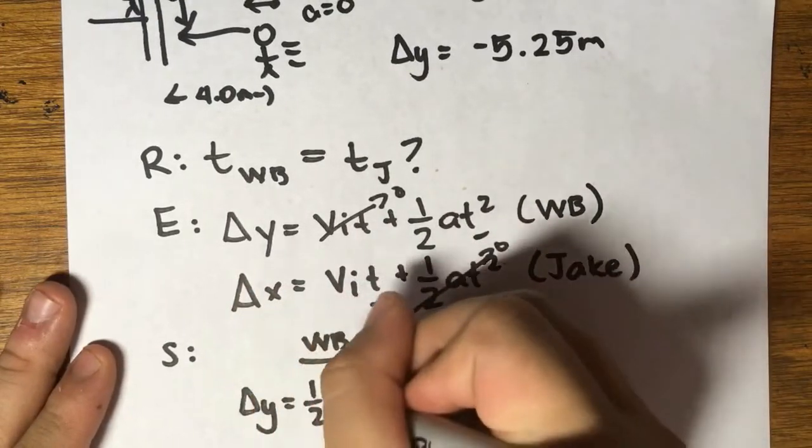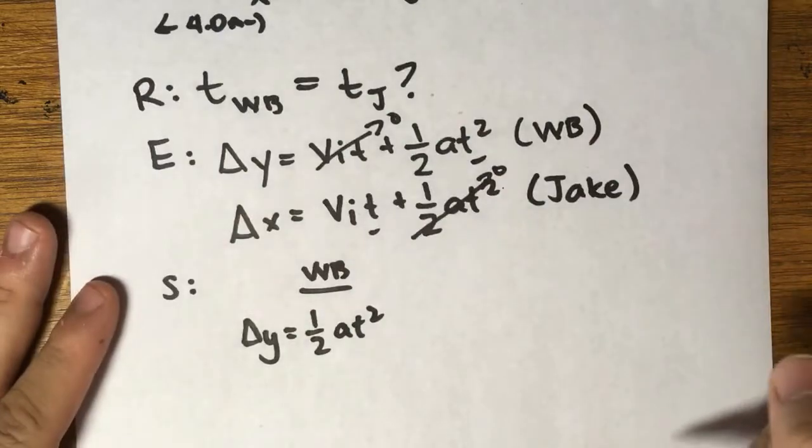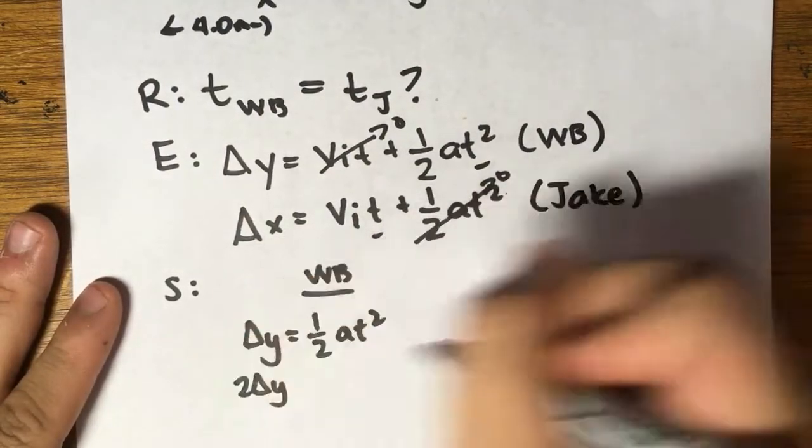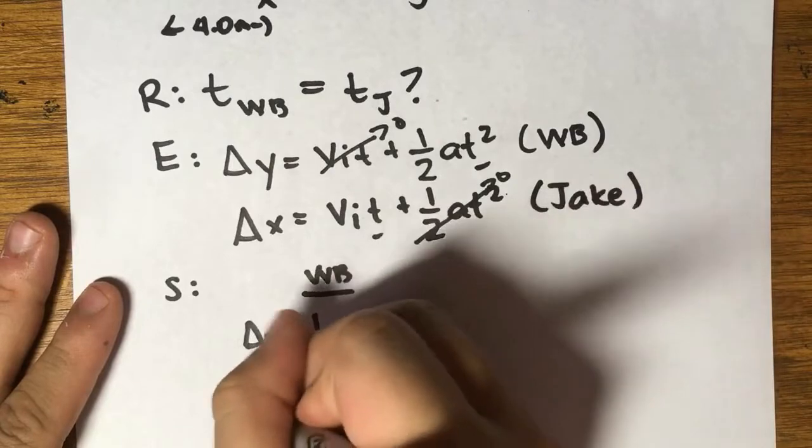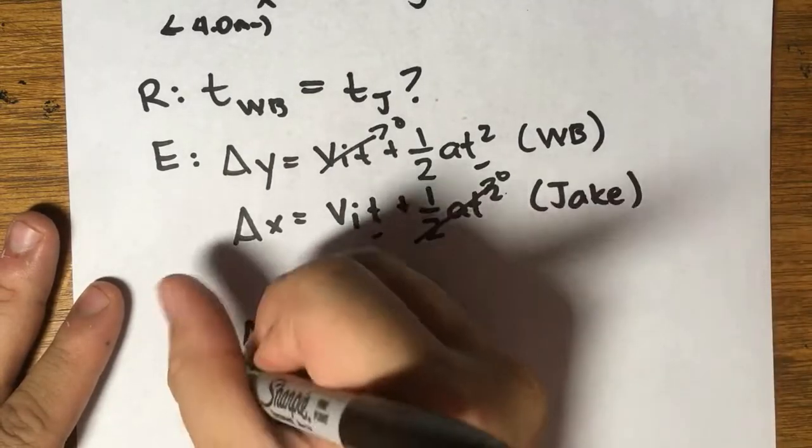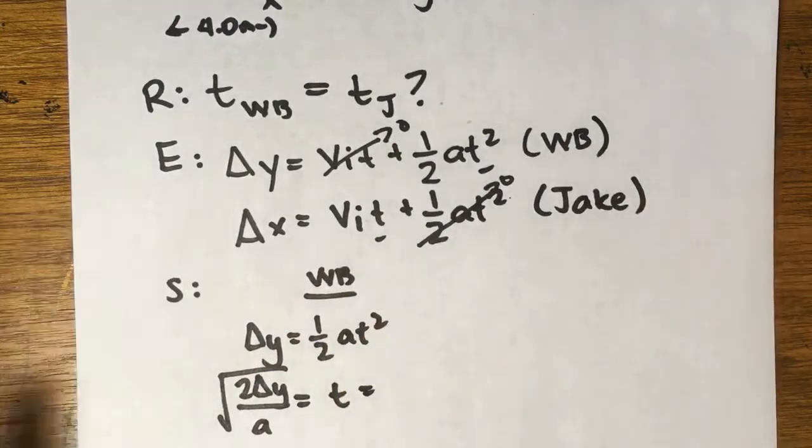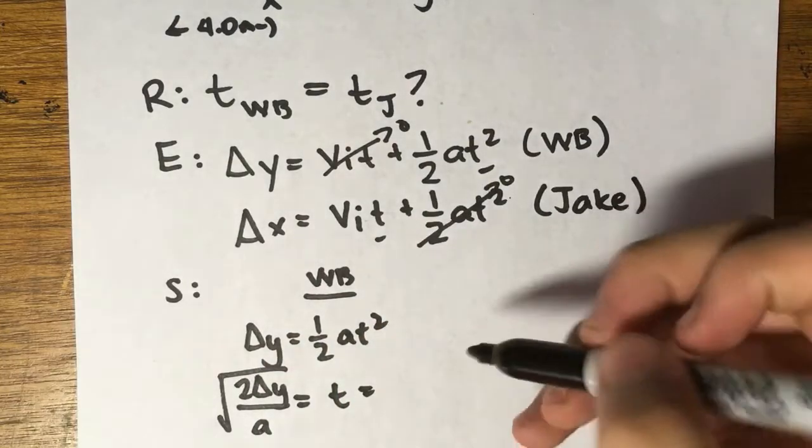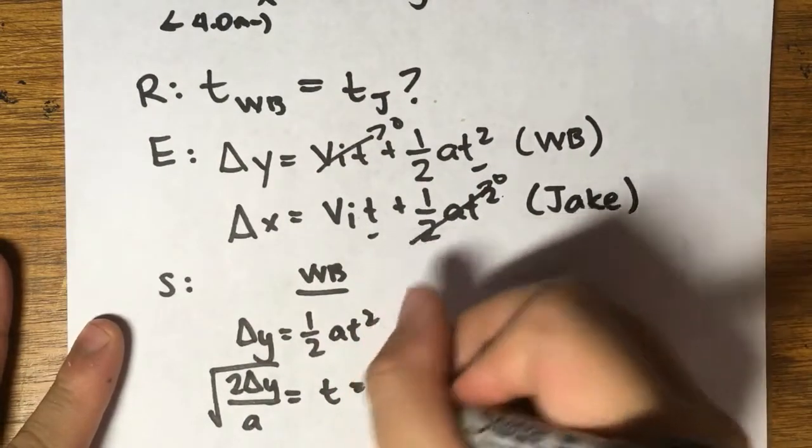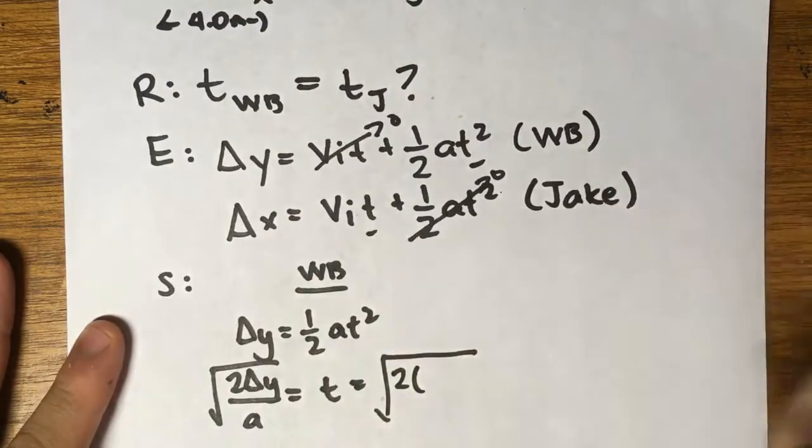Let's start with the water balloon. That's going to be delta y equals one-half at squared. Let's rearrange this, so this will be 2 delta y. Let's put the a at the bottom, and because there's a square, the square root will be equal to the time. Now let's solve.